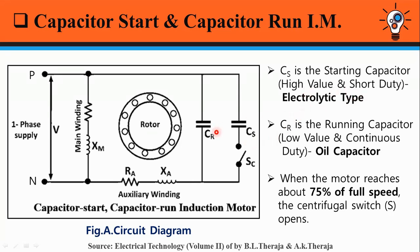Another capacitor CR, known as the Running Capacitor, is connected in the circuit. It remains in the circuit continuously during starting and running of the motor. It is of oil capacitor type — it has a low value but continuous duty, as it is connected in the circuit throughout the working of the motor. Thus, the motor is a two-value capacitor motor.